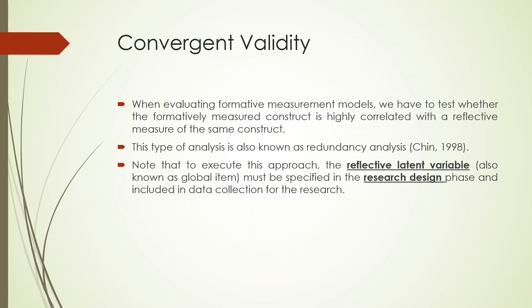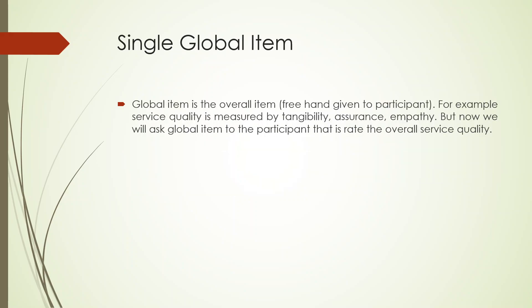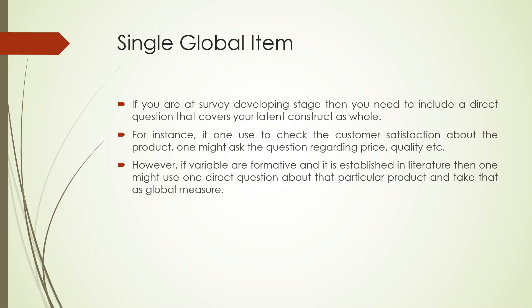In the redundancy analysis, we include a single global item in our analysis. For example, if you asked statements on tangibility, assurance, and empathy — five statements on service quality — at the end you should ask: 'Overall, rate the overall service.' This overall question, which you may have seen in malls or restaurants, is the single global item that represents all the statements above it. It is necessary that the global item is introduced at the questionnaire level when you are developing the questionnaire.